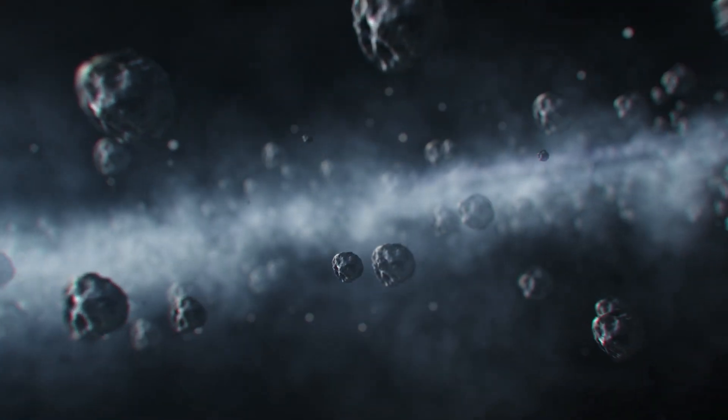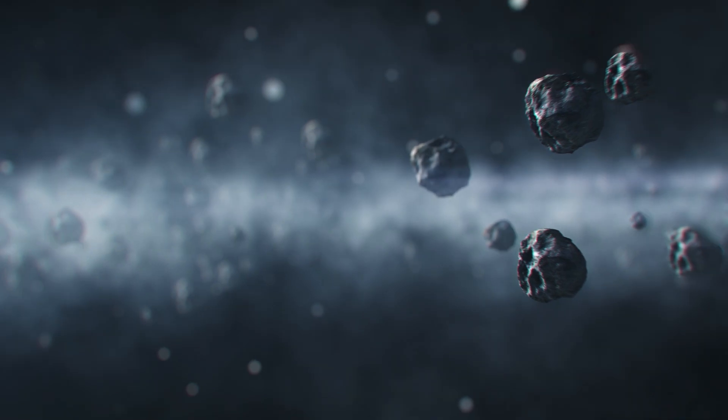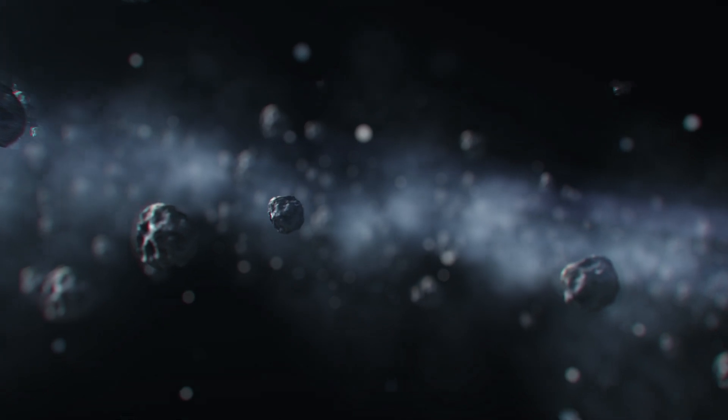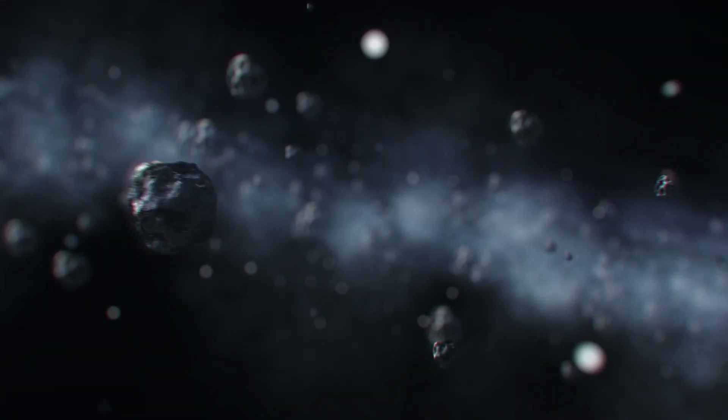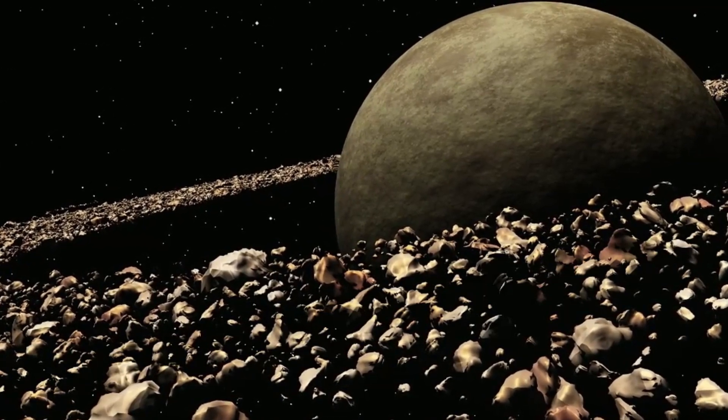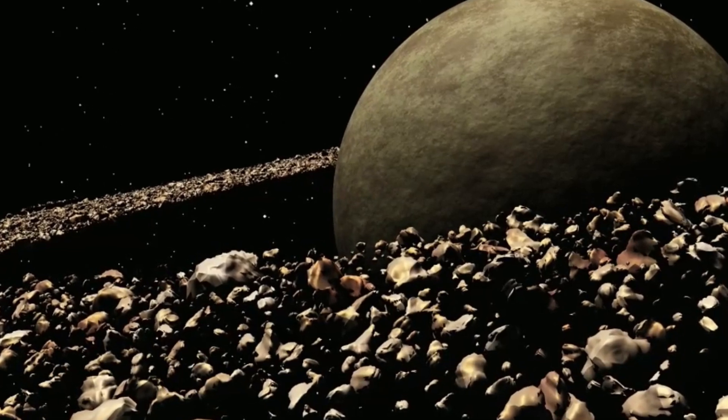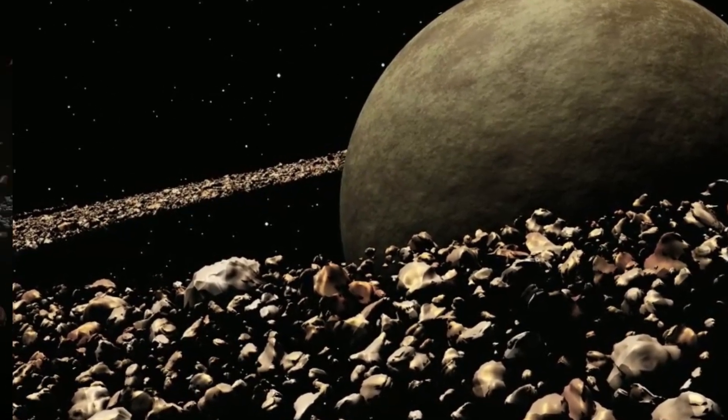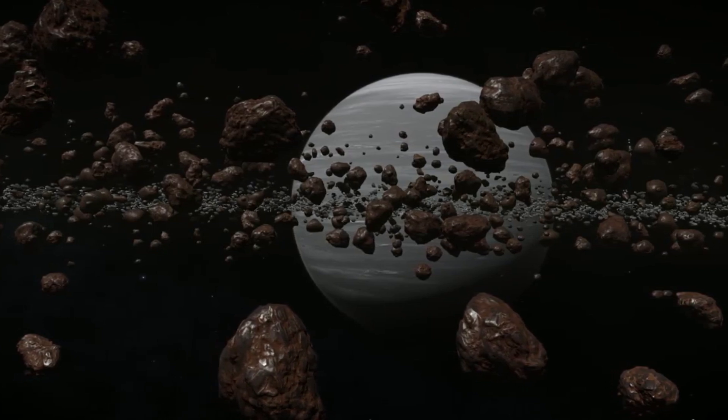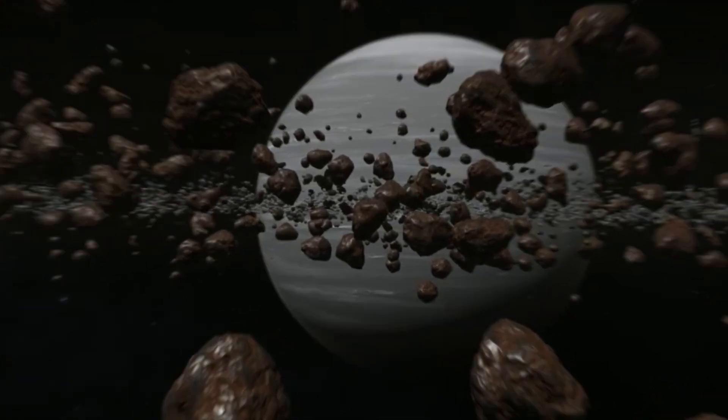The Fomalhaut Asteroid Belt. Fomalhaut, a relatively young star located just 25 light years away, is known for its dusty environment. Prior to the JWST's observations, the complexity of Fomalhaut's dust belt was uncertain and it was hypothesized that it could contain an extrasolar asteroid belt similar to our own. Since the JWST is primarily designed to study infrared radiation emitted by dust, its observations of Fomalhaut's belts are particularly relevant.